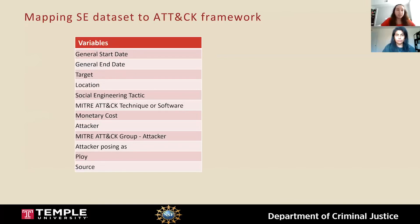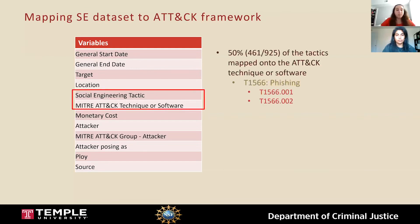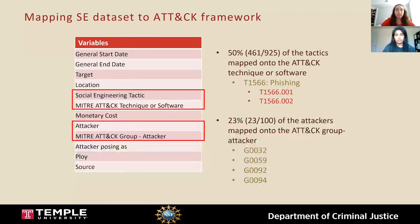The first data set is a repository of social engineering incidents. We currently have 623 incidents recorded spanning from 2011 through August 2020. Some of the variables we record include dates, who the target is and where they're located, what social engineering tactic is used, the monetary cost of the attack, who the attacker is, and some information about the ploy of the attack. About 50% of the social engineering tactics in our data set mapped onto the ATT&CK techniques or software. The primary techniques we were able to match were phishing and spear phishing, but there were also some instances of malware that mapped onto the software in the framework. We also mapped about 23% of the attackers onto the ATT&CK group — Group 32 or Lazarus Group appeared most commonly, while Groups 59, 92, and 94 were also repeatedly mapped.